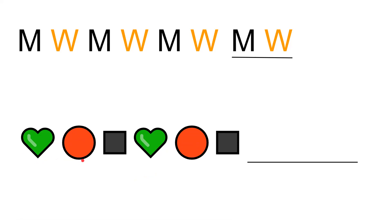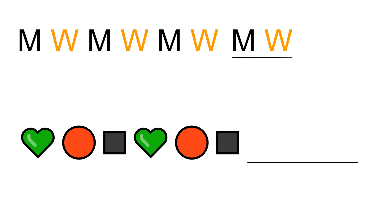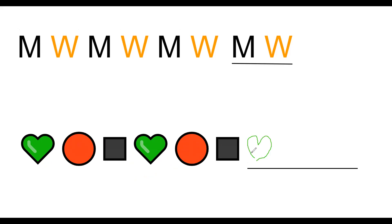Now I have to guess what will come after this black square. Let us go back to the start and see what came. So heart, circle, black square, then green heart. So what will come here? It will be a green heart. Now what is coming after the green heart? It is a red circle. So I will draw a red circle here. Then what is coming after the red circle? It is a black square, so I will draw a black square like this.